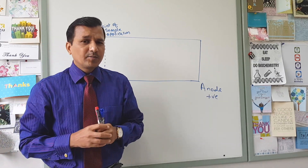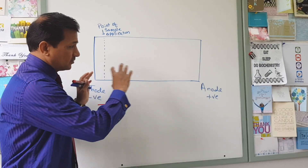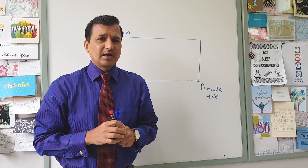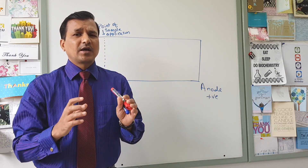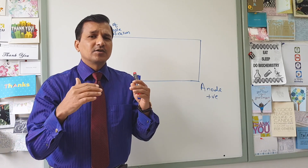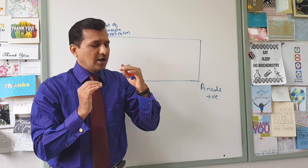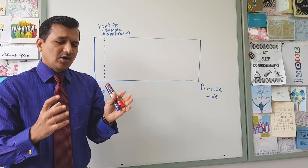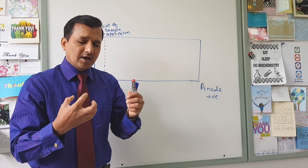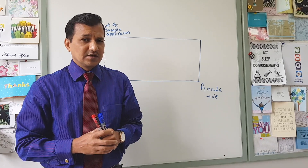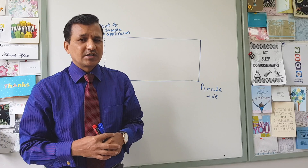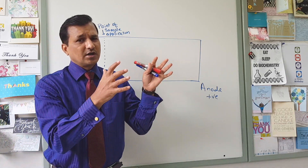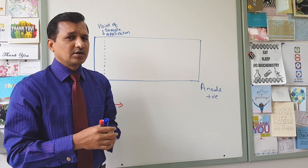Now let's see how lipoproteins move on the electrophoresis slide. We have chylomicrons, very low density lipoproteins (VLDL), low density lipoproteins (LDL), and high density lipoproteins (HDL). The largest is the chylomicron, followed by VLDL, then LDL, then HDL. These lipoproteins also vary in the apolipoproteins present on their surface, which affects the overall negative charge on each lipoprotein.